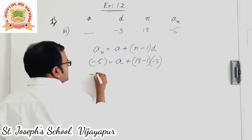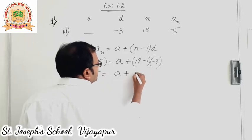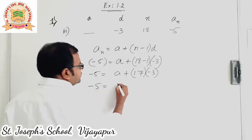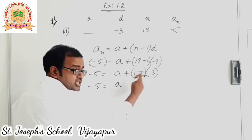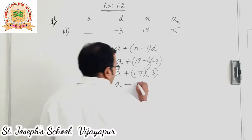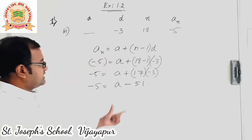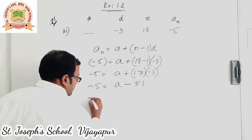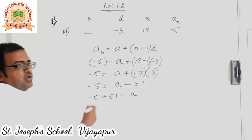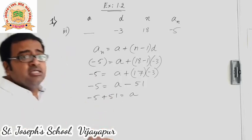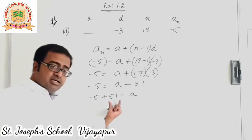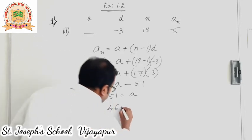Further simplification: minus 5 is equal to a plus 18 minus 1, which is 17, into minus 3. Next step: minus 5 is equal to a plus the product of plus into minus, so minus 17 multiplied by 3, that is minus 51. Now minus 51 comes to the other side and becomes plus 51. So minus 5 plus 51 is equal to a. Since 51 and 5 have different signs, we subtract: 51 minus 5 is 46, with the sign of the bigger number 51, so the sign is plus. Therefore 46 is equal to a. We can fill in the blank as 46.